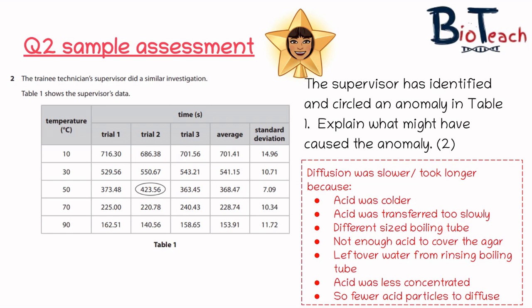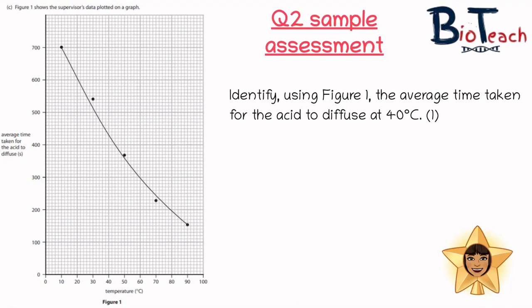So I think questions like this in the beginning are pretty straightforward. The challenge comes when you have to read off the graph and lots of students really struggle with this. So part C of this question was saying identify, using Figure 1, the average time taken for the acid to diffuse at 40 degrees.